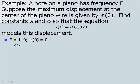Remember that S of 0, which is 0.11, is our amplitude or A. Our frequency is the reciprocal of our period. So instead of 2 pi over omega, we take the reciprocal, which is omega over 2 pi. And this is equal to 110.